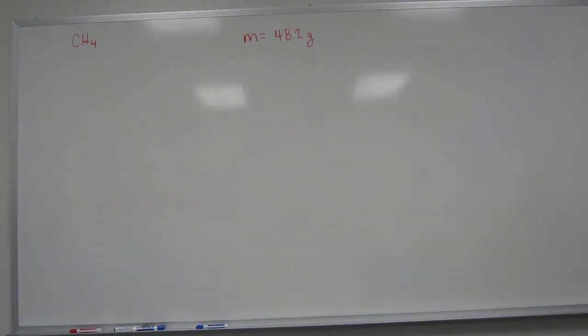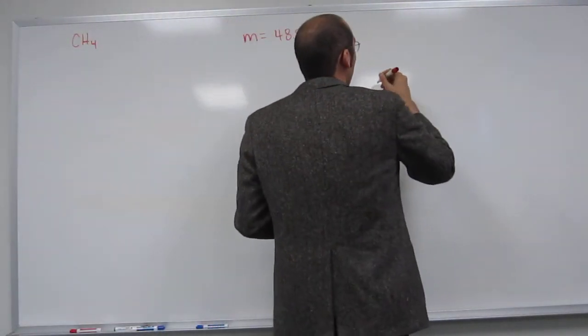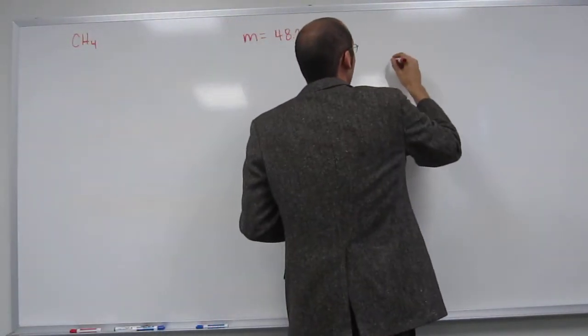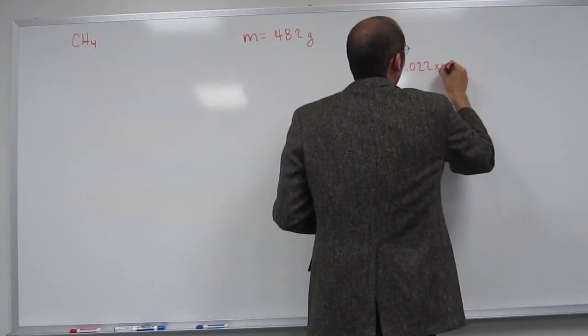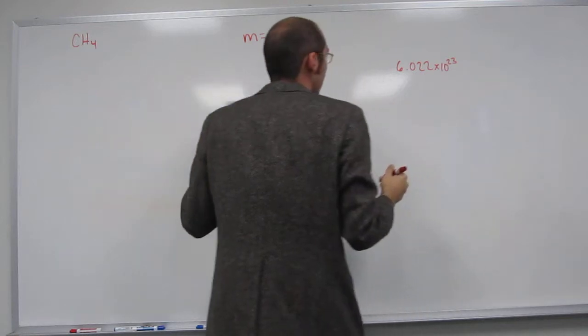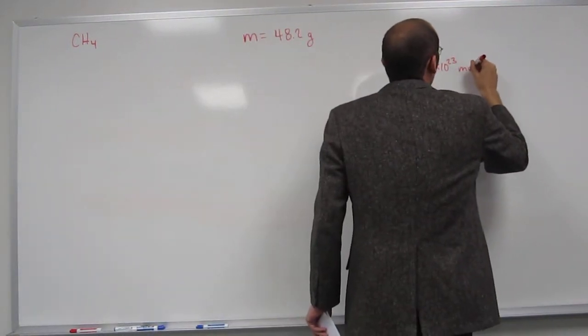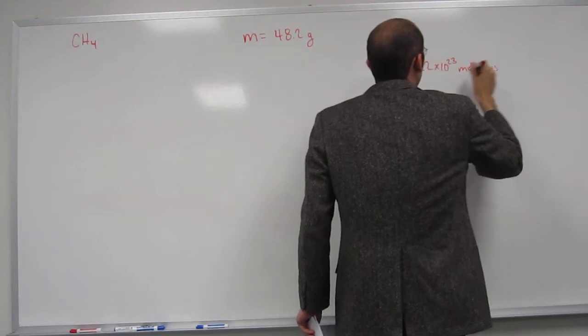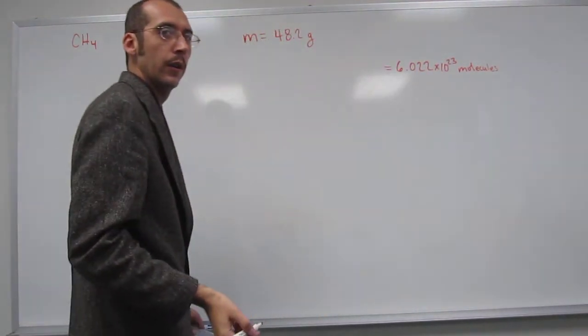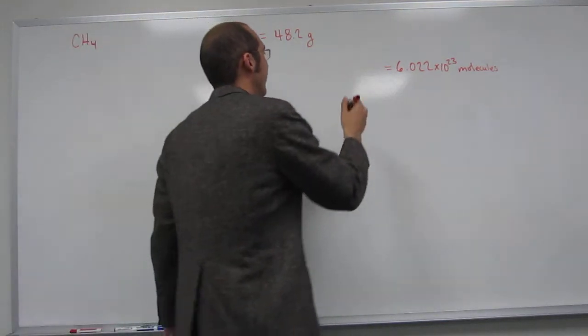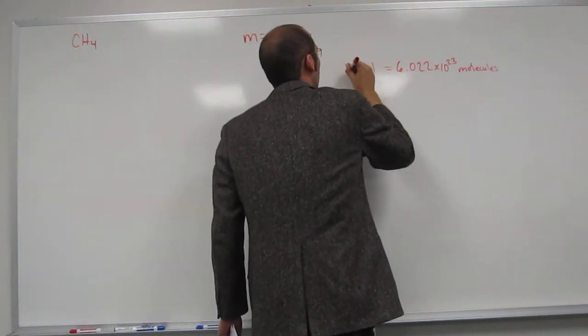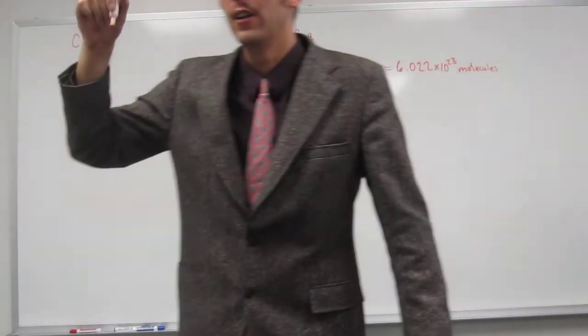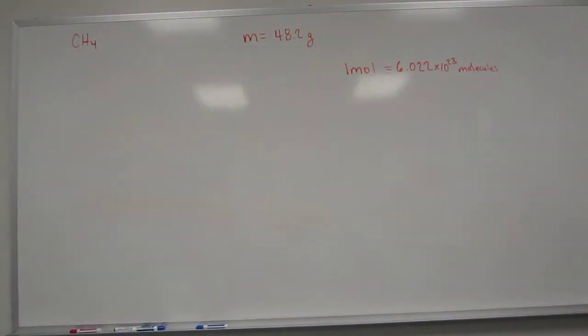Mass equals 48.2 grams. So the first thing you're going to have to do, well, not given to you is Avogadro's number. You've got to remember that. So 6.022 times 10 to the 23rd, and in this case it's going to be molecules. Do you know what that equals? Not just Avogadro's. That's what you want to think of.